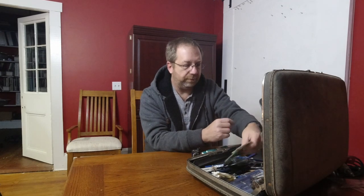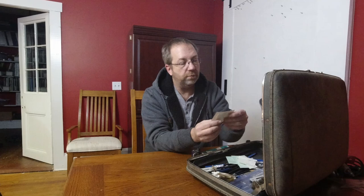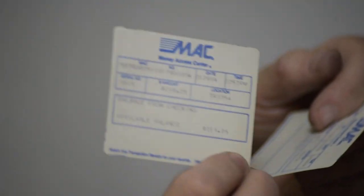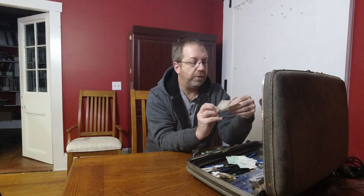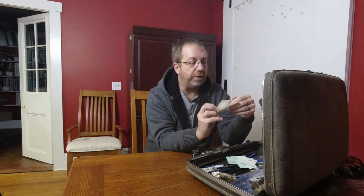Let's see. This is what ATM receipts used to look like. I haven't seen a Mac machine, a money access center in a long time. Let's see. Amount balance, $218.25. Yep, sounds like me.